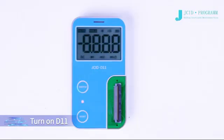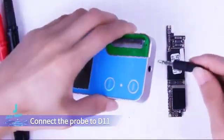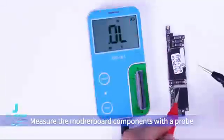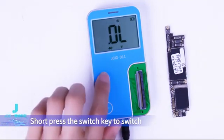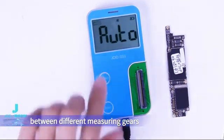Turn on D11, connect the probe to D11, measure the motherboard components with a probe. D11 screen displays the measurement results. Short press the switch key to switch between different measuring gears.